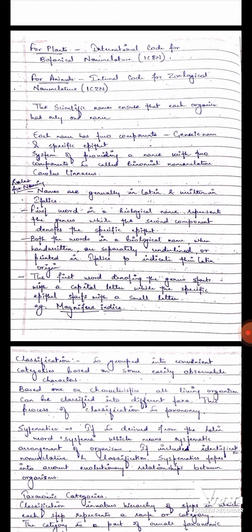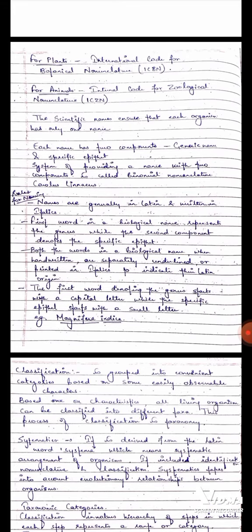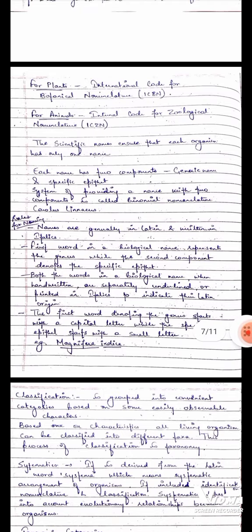There are some four rules of naming. Names are generally in Latin and written in italics. First word in a biological name represents the genus while the second component denotes the specific epithet. Both the words in a biological name when handwritten are separately underlined or printed in italics to indicate the Latin origin. The first word denoting the genus starts with the capital letter while the specific epithet starts with the small letter. Like for example it is written Mangifera indica.